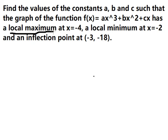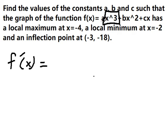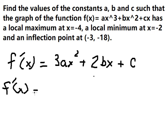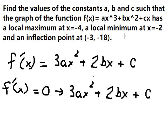To find the local maximum and local minimum, we need to find the first derivative of the function. The first derivative of as³ is 3as², the first derivative of bs² is 2bs, and the first derivative of cs is c. To get the local maximum and local minimum, we set the first derivative equal to zero.